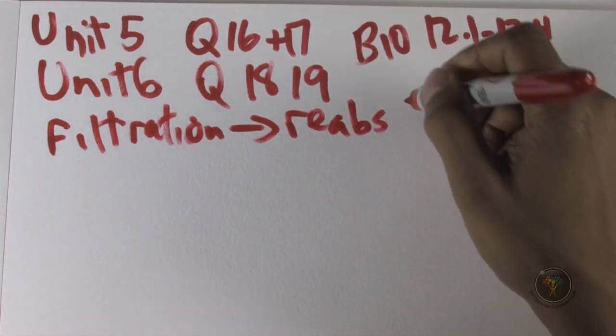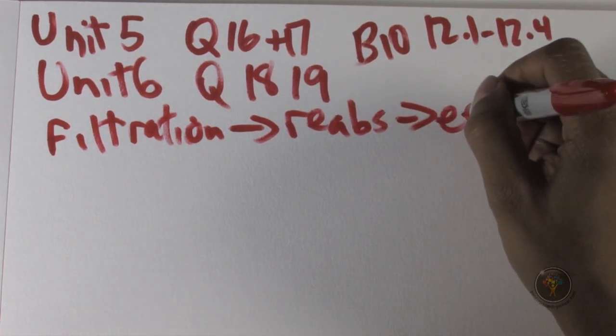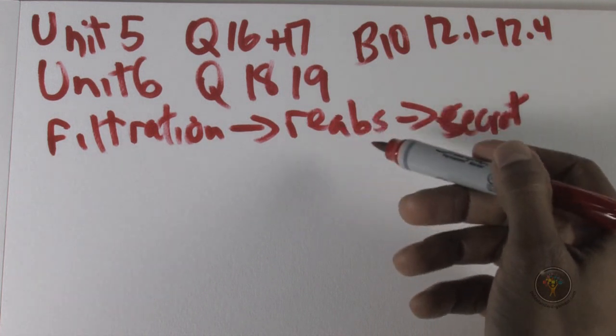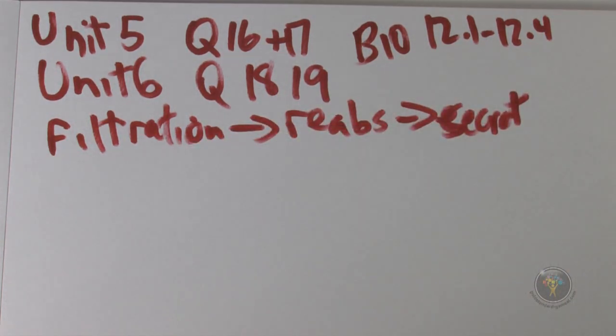So this is the nephron. It filters, so that means it sends blood at significant blood pressure and it goes across a membrane and is filtered by those membranes in Bowman's capsule through the glomerulus.